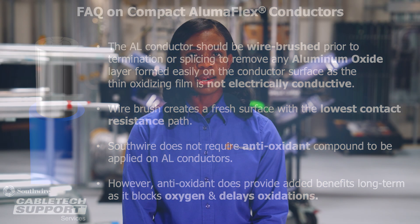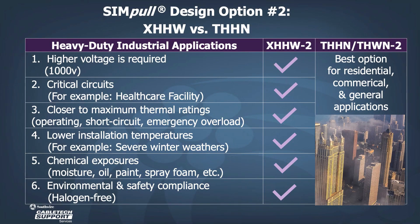Our second design option is whether to choose Simple XHHW-2 or Simple THHN. THHN-THWN-2 is the best option for residential, commercial, and general applications. However, if your application requires a higher voltage, is a critical circuit, closer to the maximum thermal ratings, lower installation temperatures, potential chemical exposure, or you need a halogen-free product, XHHW-2 is more suitable.